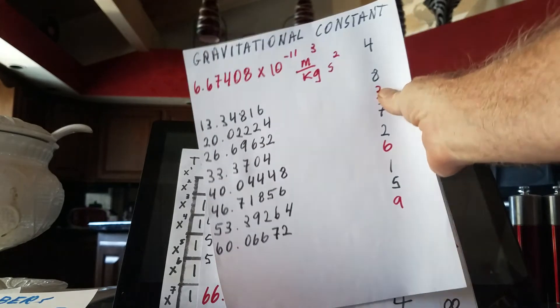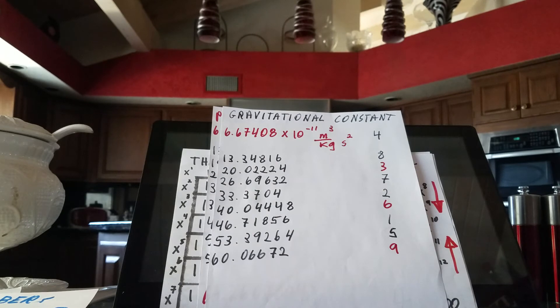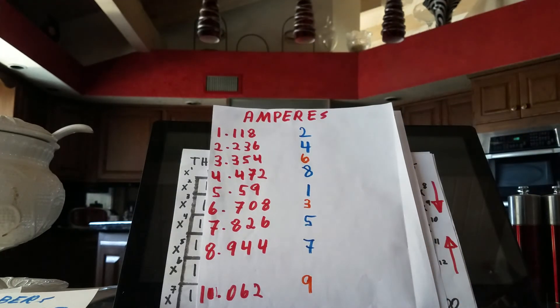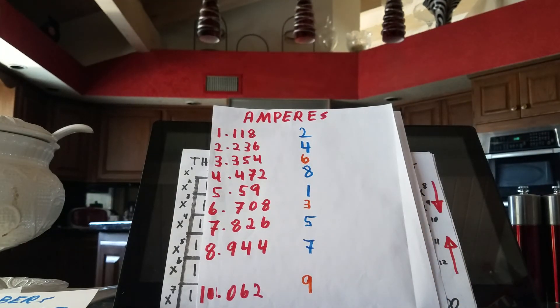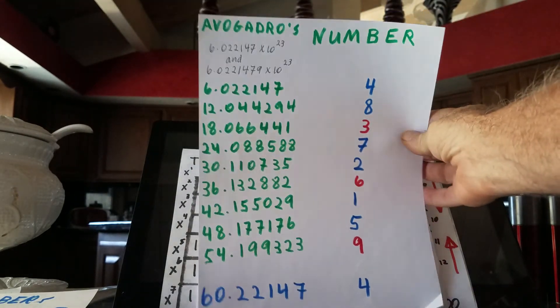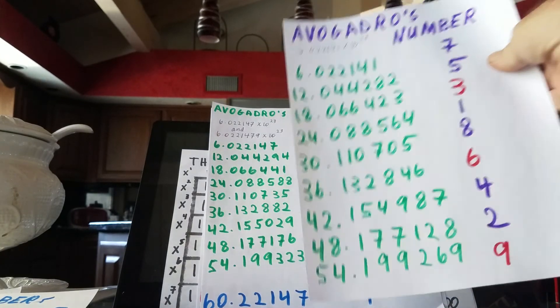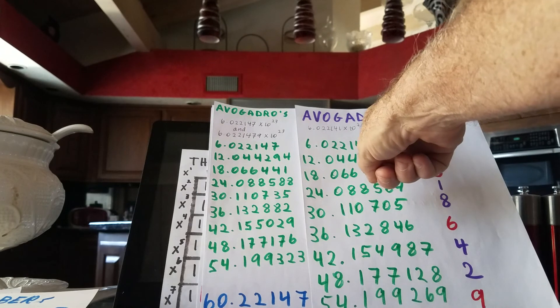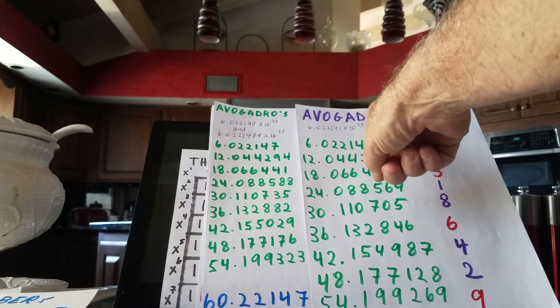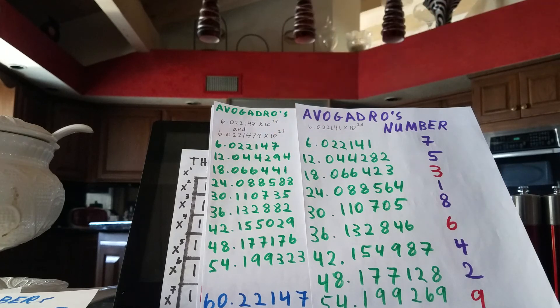But some of these numbers follow it in a different way, and I think there's some information that can be gathered from that. We have the gravitational constant, and it follows the 369 code. We have an ampere, and amperes also follow the 369 code. We have Avogadro's number, and Avogadro's number also follows the 369 code. If we do Avogadro's number to a different degree of specificity—here I stopped at 6022141, here it's 6022147—if you add on anything, any number, it will still follow the 369 code. That's the point I'm trying to make.